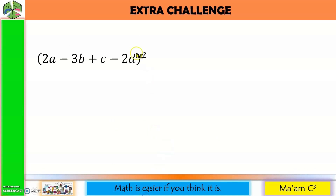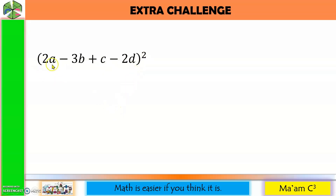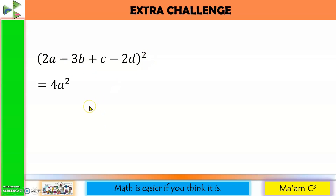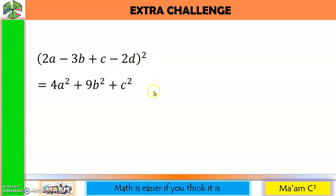Let us do an extra challenge. What if we have a square of a multinomial with 1, 2, 3, 4 terms? Same procedure. Let us square each term: 2a quantity squared is positive 4a squared. Negative 3b quantity squared is positive 9b squared. c squared is c squared. Negative 2d quantity squared is positive 4d squared.